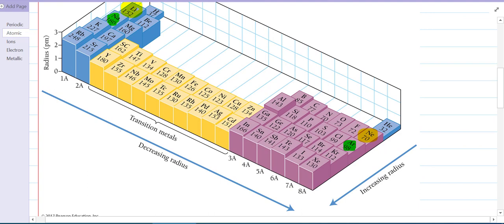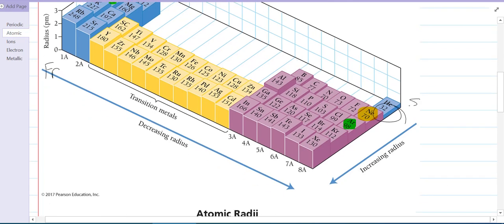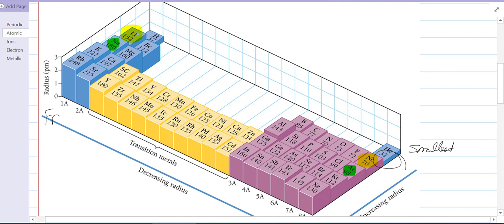So that's atomic radius. So who's the biggest? Francium is the biggest, who's the smallest? Helium is the smallest. That's even smaller than hydrogen, by a couple of picometers.